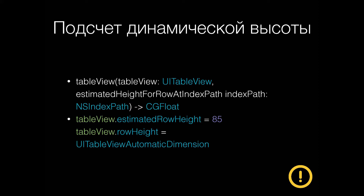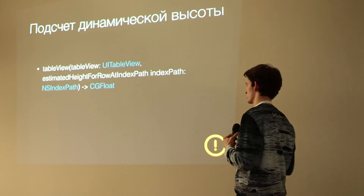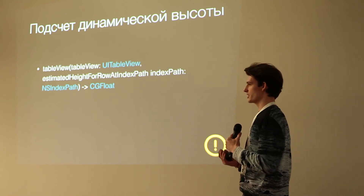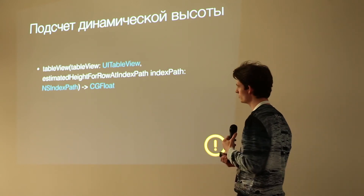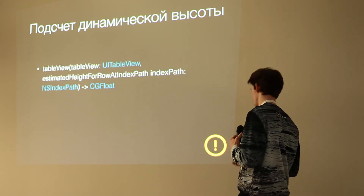Теперь то, что появилось с iOS 7 и развилось с iOS 8 — это подсчёт динамической высоты. В базе есть метод estimatedHeightForRowAtIndexPath. Он создан для того, чтобы мы могли указывать приблизительную высоту. Если у нас в табличке 100 ячеек, чтобы код не пересчитывал все 100 ячеек, мы можем отправить приблизительную высоту, а дать реальную к тому моменту, когда промотаем до этой ячейки.